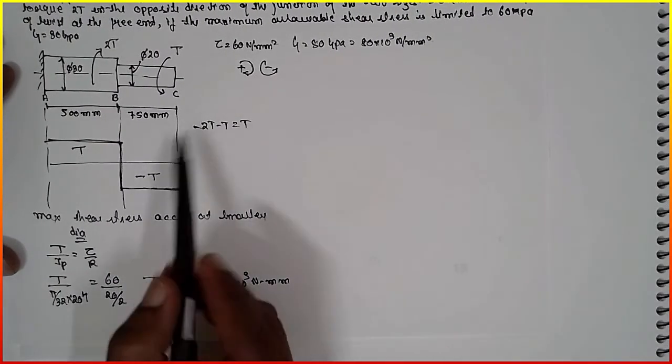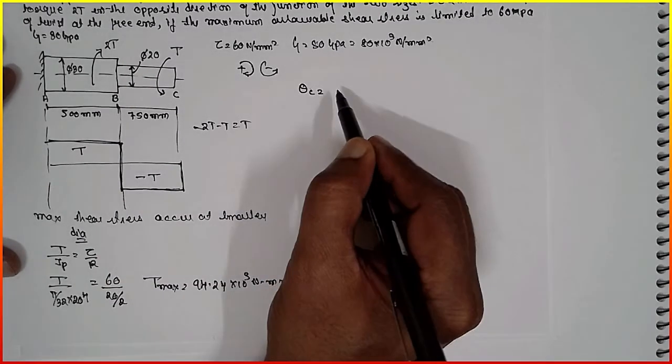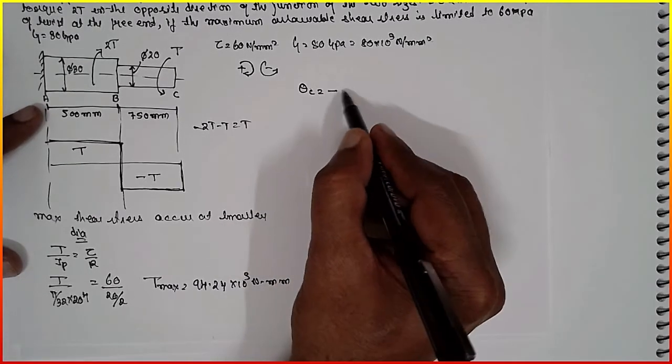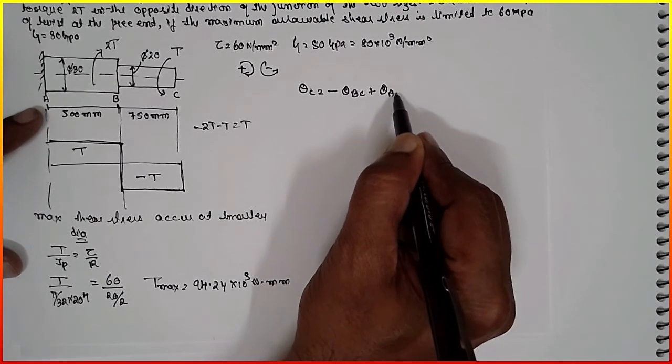Let us consider theta C here. Theta C as per the diagram, as per the diagram, minus theta BC plus theta AB.